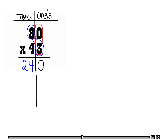Now we are going to move over to the tens place, and remember when I move over to the tens place I need to add a 0 — moving to a new place value. Let's scratch out the 3; we are done with the ones place so I don't want to confuse the 3 with anything I am doing in the tens place.